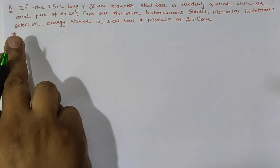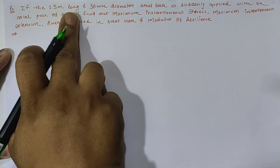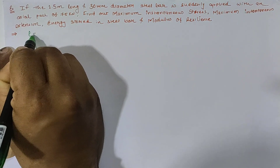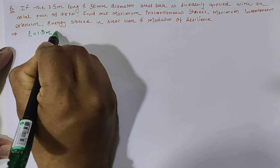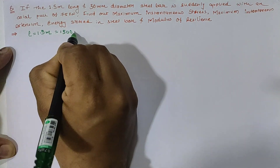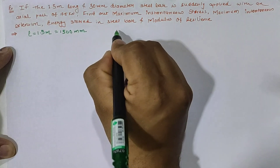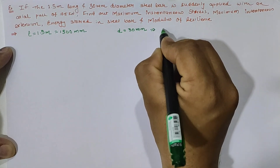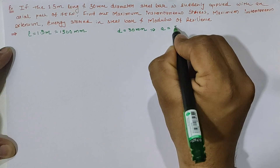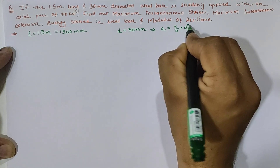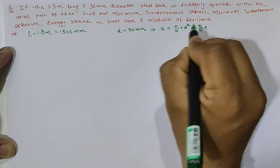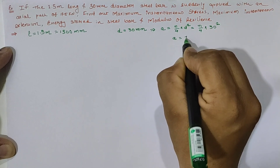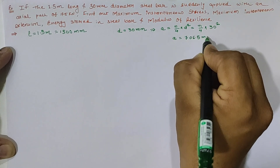Looking at the example data, we have a 1.5 meter long and 30 mm diameter steel bar. So L is equal to 1500 mm. The diameter is 30 mm, and using the area equation — pi by 4 into d squared — we get pi by 4 into 30 squared, hence our area is 706.5 mm square.